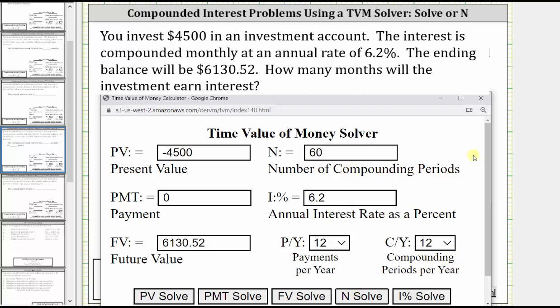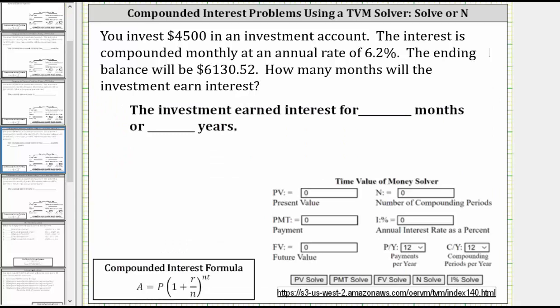N is equal to 60 and since N represents the total number of compounding periods and the interest is compounded monthly, it takes 60 months or the investment earns interest for 60 months to reach the desired balance of $6,130.52. So our answer is 60 months.